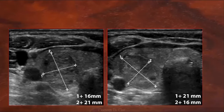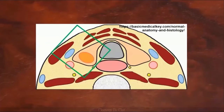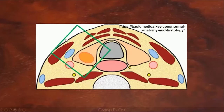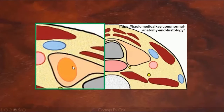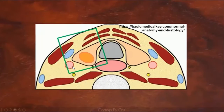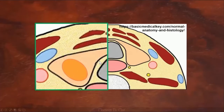This is an example of a nodule that looks taller than wide on the left image and wider than tall on the right image. Why does that happen? It's because the apparent orientation of the nodule depends on the location of the transducer. When the transducer is in a lateral position, the nodule will appear taller than wide. On the other hand, when the transducer is in a more anterior position, the nodule will actually appear wider than tall.